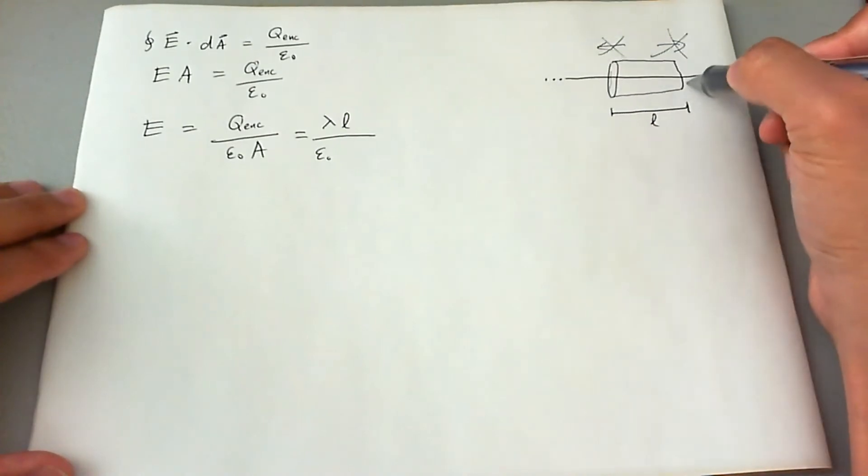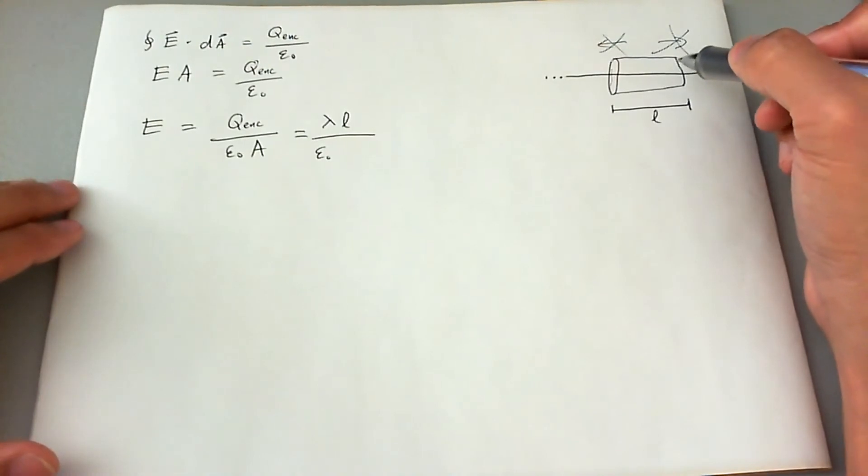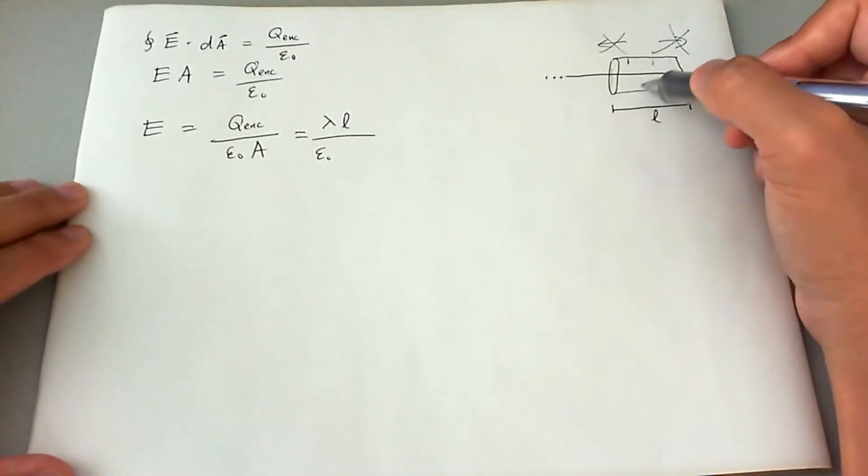So therefore, the two circular sides of this Gaussian curve, even though it's an enclosed curve, are not experiencing any E field penetration. It's only the top, bottom, and front, and backs, okay? Just the cylinder of this circular body part.